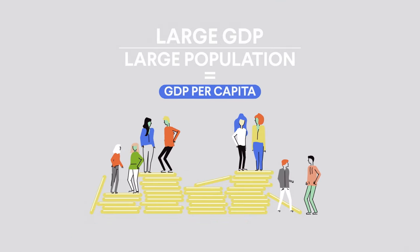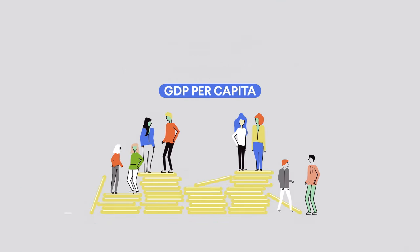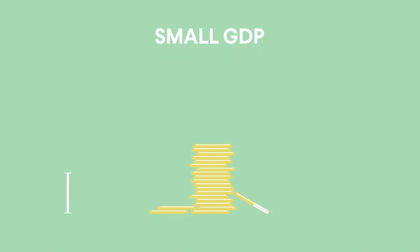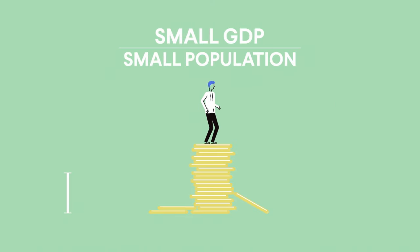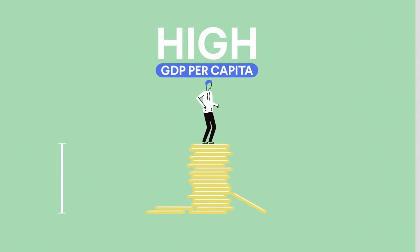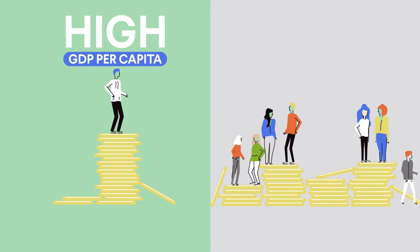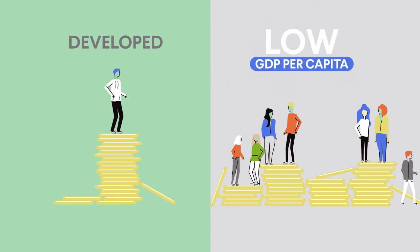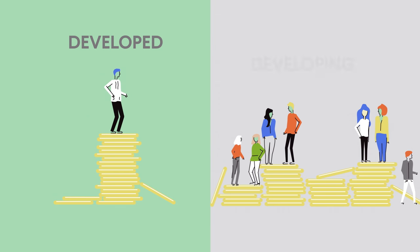Some countries with a large GDP have a large population, so their GDP per capita might be relatively low. On the other hand, some countries with a small GDP might have a small population, so their GDP per capita might be relatively high. Countries with high GDP per capita are considered richer and more developed, and countries with low GDP per capita are considered poorer and said to be developing.